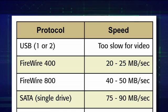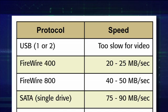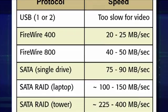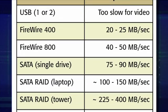Take the exact same drive, disconnect the FireWire 400 cable, plug in a FireWire 800 cable, and now you're going to get 40 to 50 megabytes a second. Simply connecting via FireWire 800 will double the speed of data coming off your hard drive. Or take a SATA drive and connect it to your computer — you'll be able to get 75 to 90 megabytes a second off the exact same hard drive. When in doubt, connect your drive via SATA.